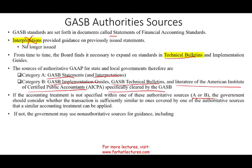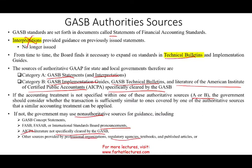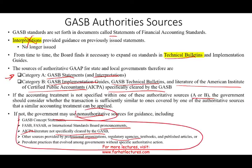If there's no similar transaction, the government would use non-authoritative sources for guidance. Those include GASB concept statements, FASB or International Standards Board pronouncements, AICPA literature not cleared by GASB, guidance from other professional organizations, regulatory agencies, textbooks and published articles, or any practices generally accepted among governmental units without specific authoritative action. So these are the non-authoritative sources, and those previously mentioned are the authoritative sources.